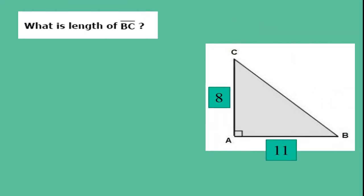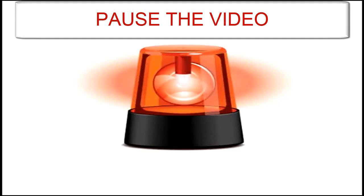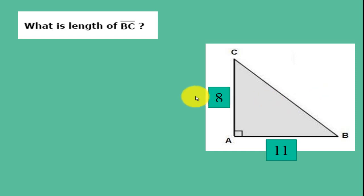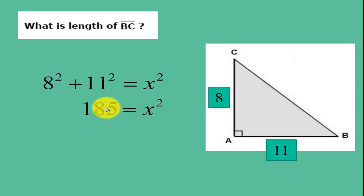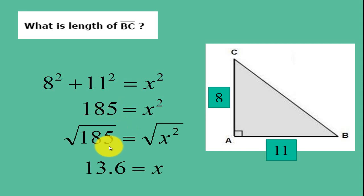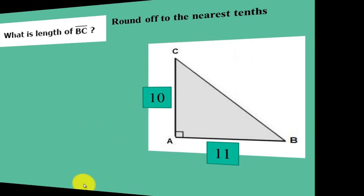Alright, for this example, I need you to pause the video and solve for your hypotenuse. When you solve this problem, your hypotenuse will start with 8 squared plus 11 squared equal to X squared. You should be able to get 185. Now take the square root of both sides, you'll get X equals 13.6. So the length of your side BC should be 13.6.